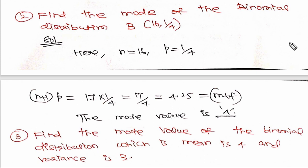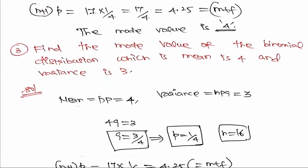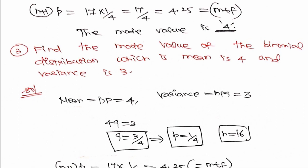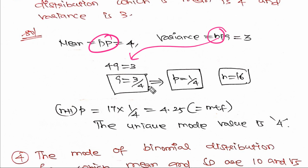Next example: find the mode value of the probability of binomial distribution B(16, 1/4). Here n = 16 and p = 1/4. We find n+1 times p = 17 × (1/4) = 4.25. Since 4.25 is not an integer, this is Case 2 with a unique mode. The mode value is the integral part of 4.25, which is 4.